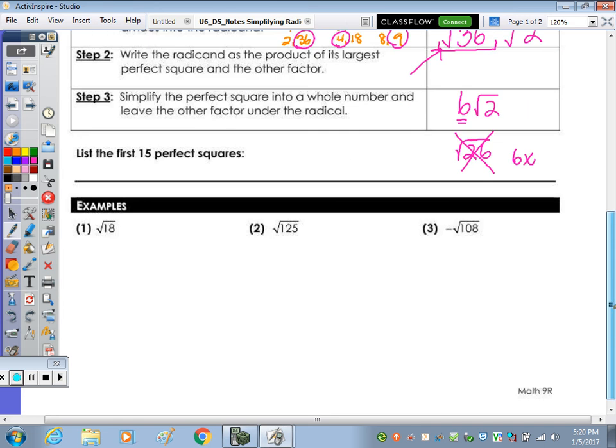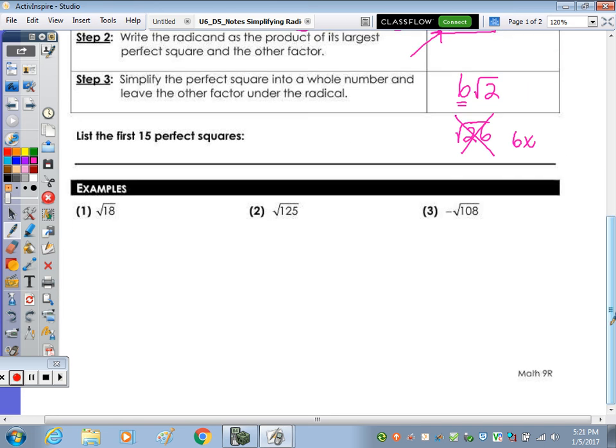So let's look at the first example, 18. So 1 times 18, 2 times 9, 3 times 6. The largest perfect square factor of 18 is 9, and it's 9 times 2. And that's written as a product. When there's no symbol in between, like there's no plus, there's no minus, when there's no symbol in between, that means multiplication, just like AB means A times B. So this is radical 9 times radical 2, square root of 9 is 3 radical 2.